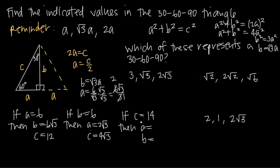What about this third example? We've been told the length of the hypotenuse is 14. Right away, the length of the shorter side is always half of the hypotenuse, so the shorter side is 7 — half of 14. And then once we have the shorter side, the length of the longer leg is the shorter leg times √3, which is 7√3.